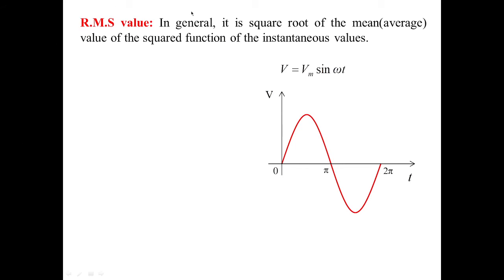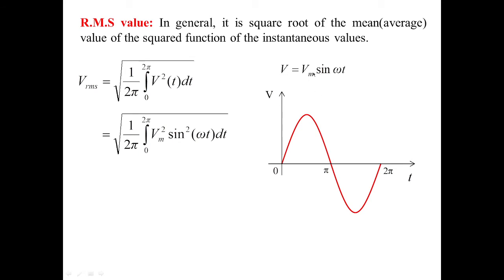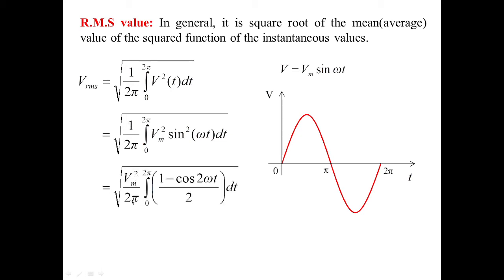Now for the same sine wave let us calculate the RMS value. In general it is the square root of the mean value of the squared function of the instantaneous value. The instantaneous value is V = Vm sin(ωt). Mathematically it is given by the square root of (1/2π) ∫₀^{2π} V²(t) dt, which is the technical formula for RMS value. Substituting the instantaneous value, it becomes Vm² sin²(ωt) dt. Vm is the maximum value so it can be taken outside as a constant, giving Vm²/2π outside, and sin²(ωt) is replaced using the trigonometric identity as (1 − cos 2ωt)/2 dt.